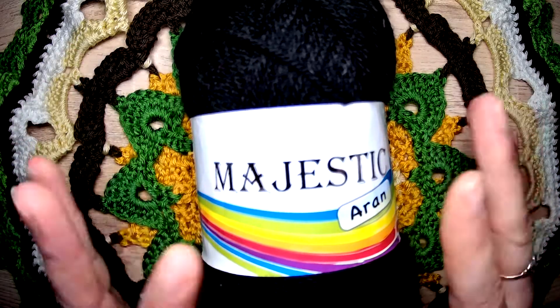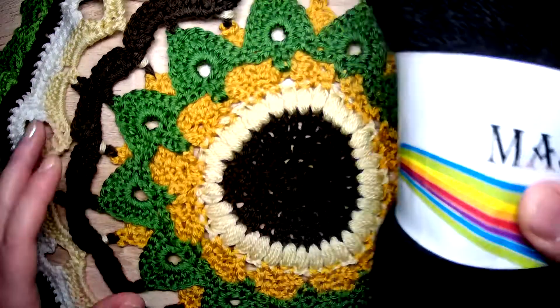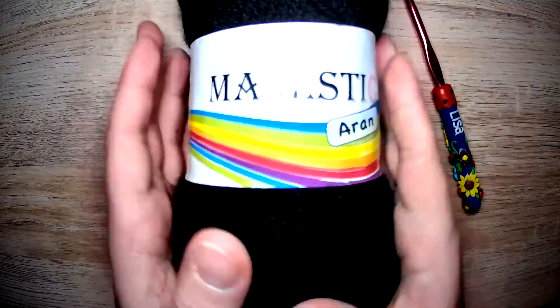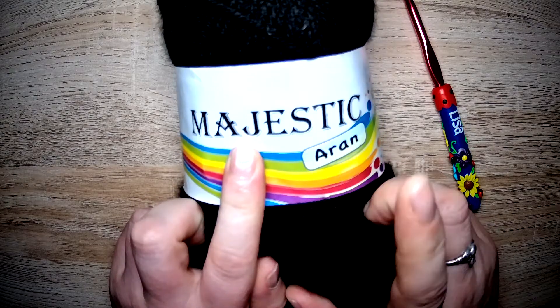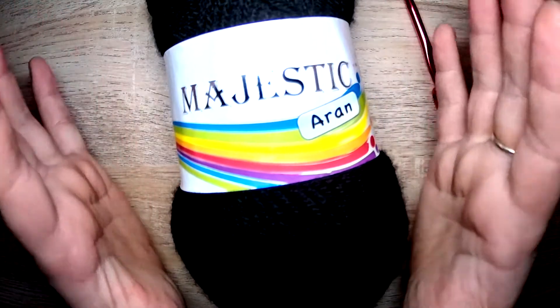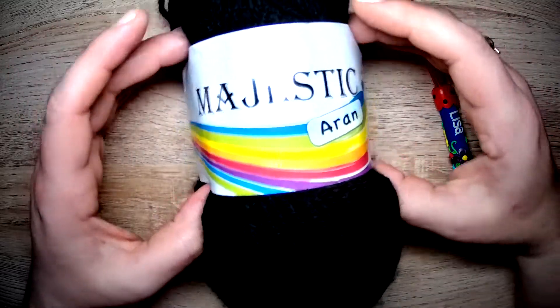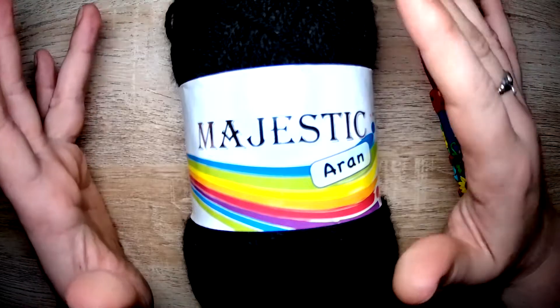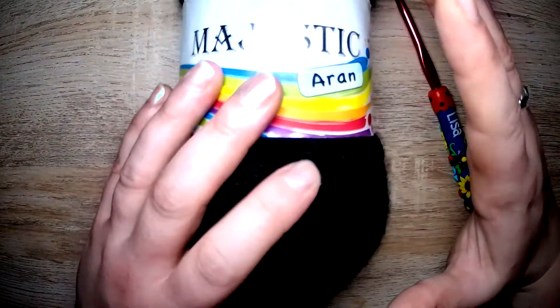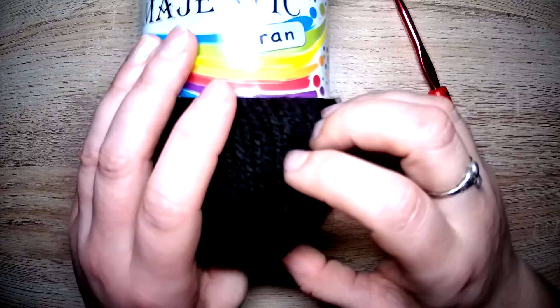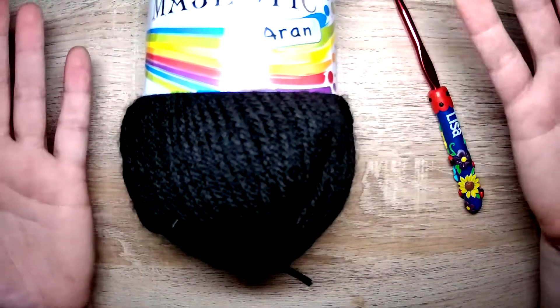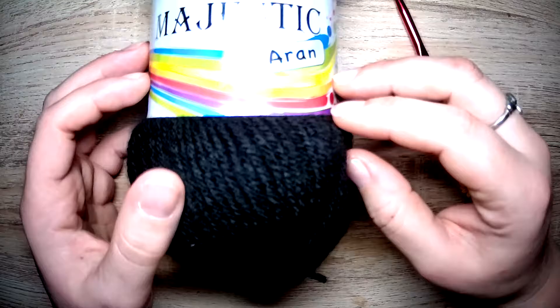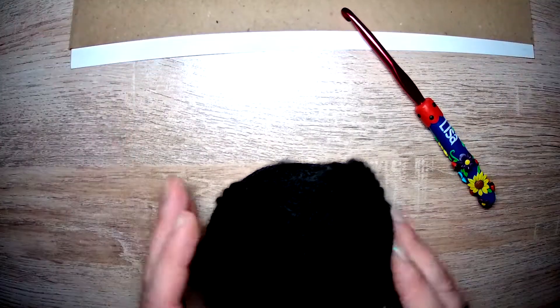Welcome to a woolly review. I am your host Lisa and today we are reviewing Majestic Aaron. There is no information on this whatsoever. I bought it for one pound from an odd bod shop. They mainly sell food and every now and again they chuck a pet bed in or a bunch of wool or some garden lights. It's just an odd bod shop but I am going to give this a review.